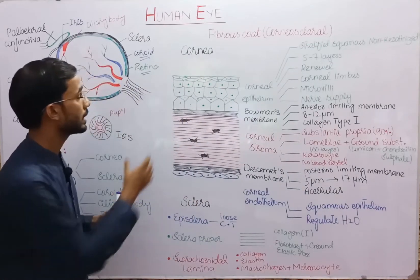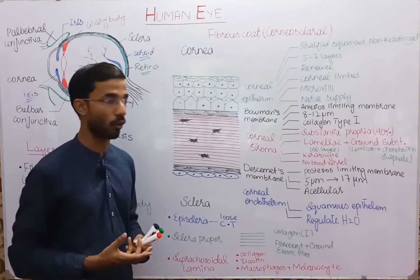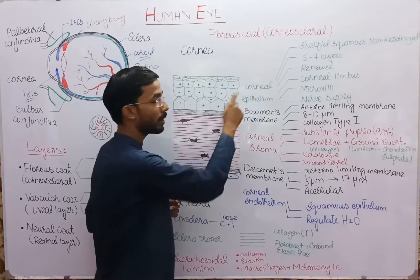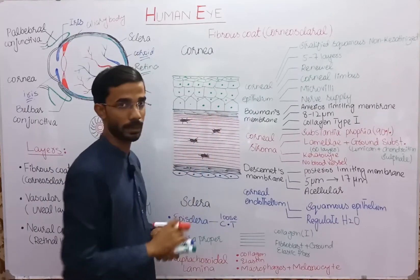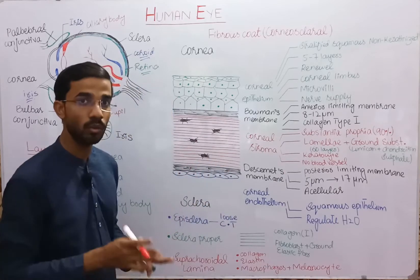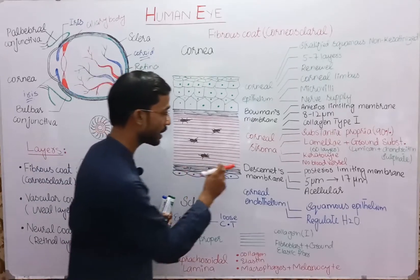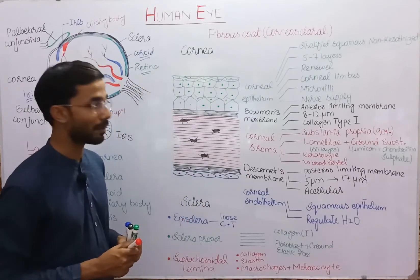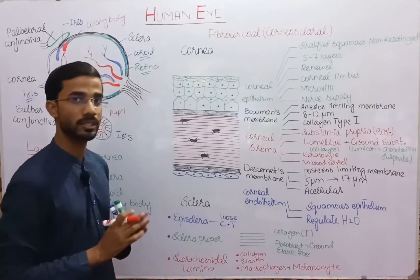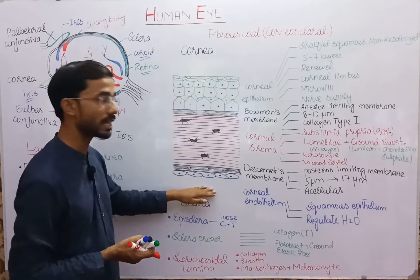Here you can see the layers of the cornea. There are basically five layers. The outermost layer is the corneal epithelium, and the innermost is the corneal endothelium. In between there is Bowman's membrane, Descemet's membrane, and at the center the corneal stroma. The outer side faces outside the eye and the inner side faces inside.